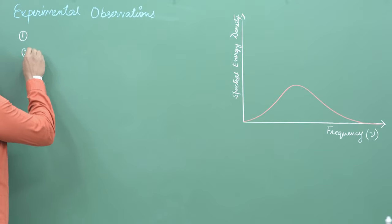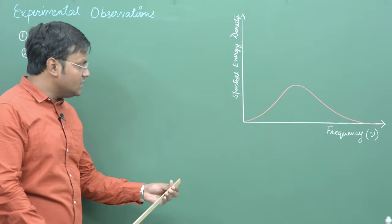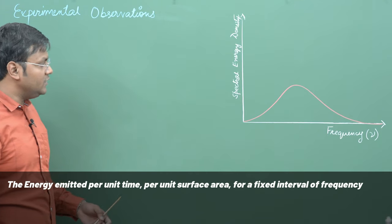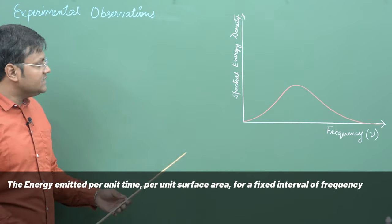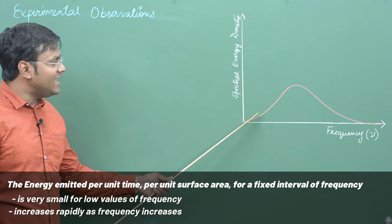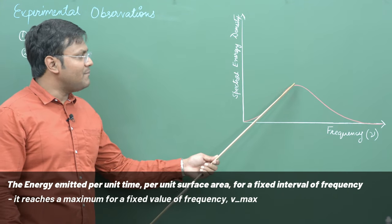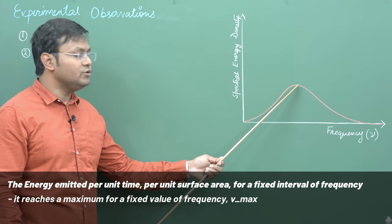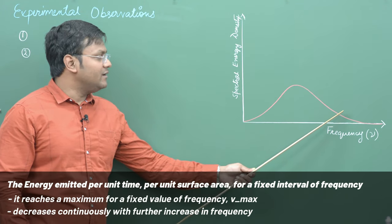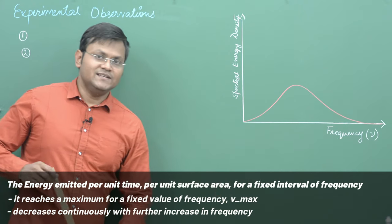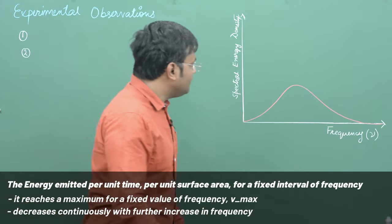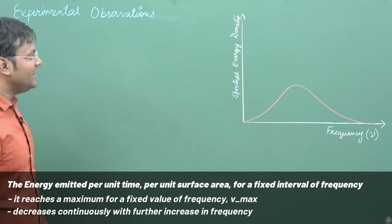The second observation concerns the nature of the graph itself. The energy density radiated by the black body for a fixed interval of frequency is very small for low values of frequency, but it increases rapidly as frequency increases, reaches a maximum at some fixed value of frequency we call nu_max, and then decreases continuously for further increase in frequency, approaching zero as frequency tends to infinity. This is a simple-looking graph, but we will see how difficult it is to explain it later on.